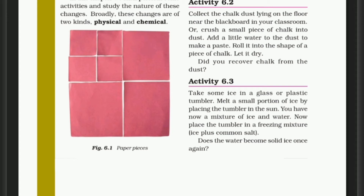We have to take some ice in a glass tumbler, then melt a small portion of ice by placing the tumbler in the sun to make a mixture of ice and water. Then place the tumbler in a freezing mixture of ice plus common salt — the water becomes solid ice once again. You have to perform this activity on your own and find out the answer.